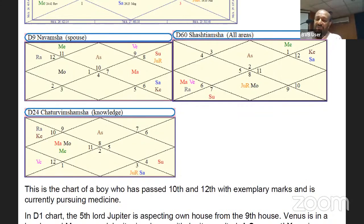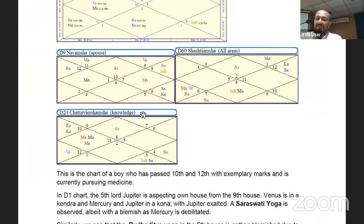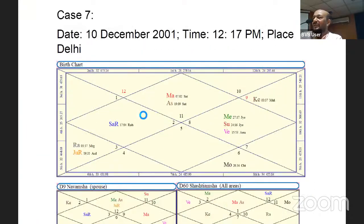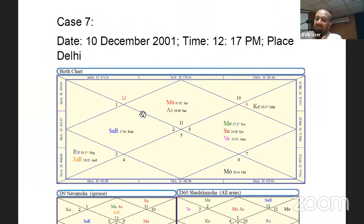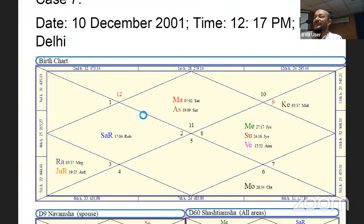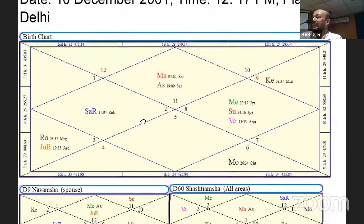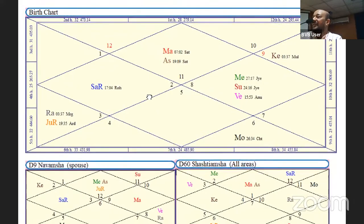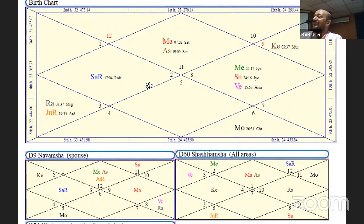Could I have the next one, please? Next chart. And if you see this boy's divisional chart also D9, D24 and D60, you'll see those promises there. And yet the blemishes are also there. So he has to struggle. So this is my last chart. This is of a girl who is pursuing her graduation from Delhi University. Now, the interesting part about this girl is that she's not only a topper in academics, but she's all around in sports, in dramatics, in education.